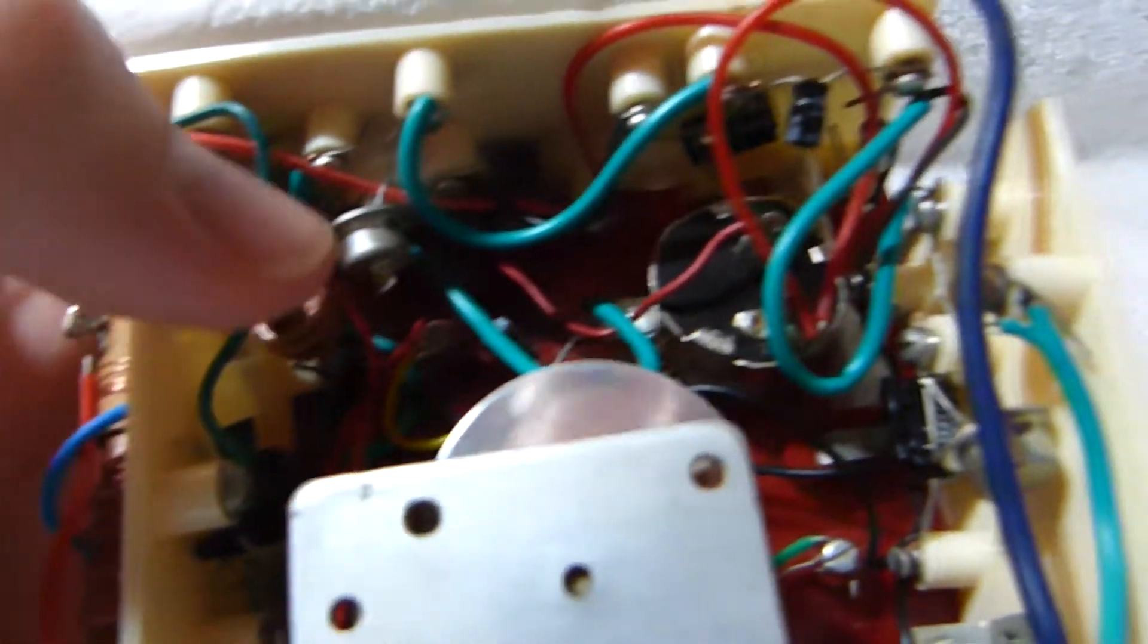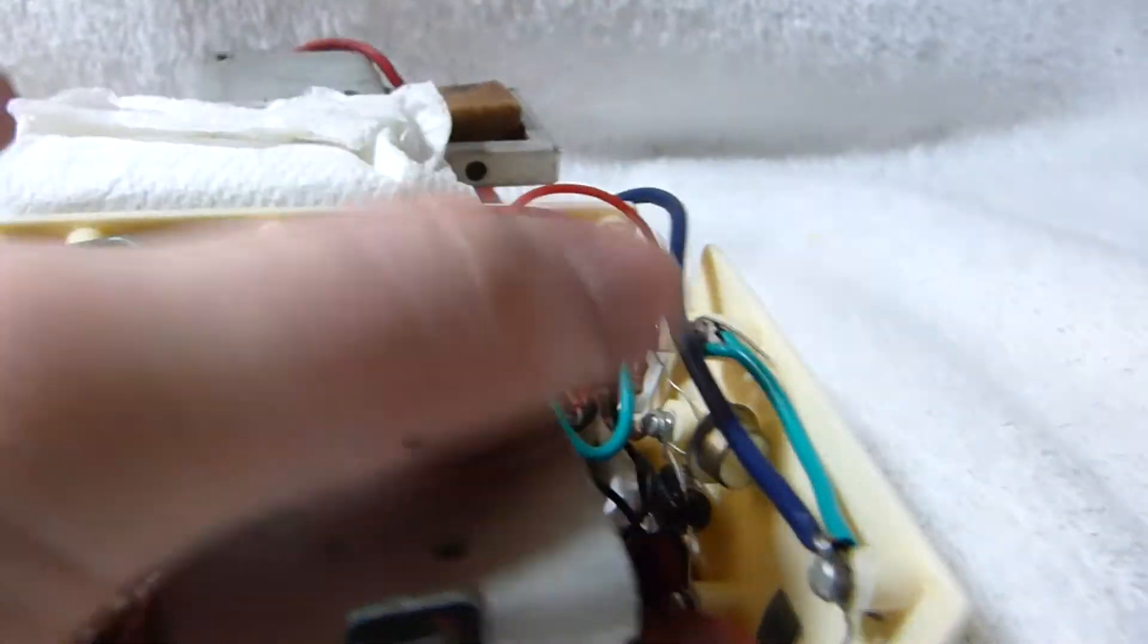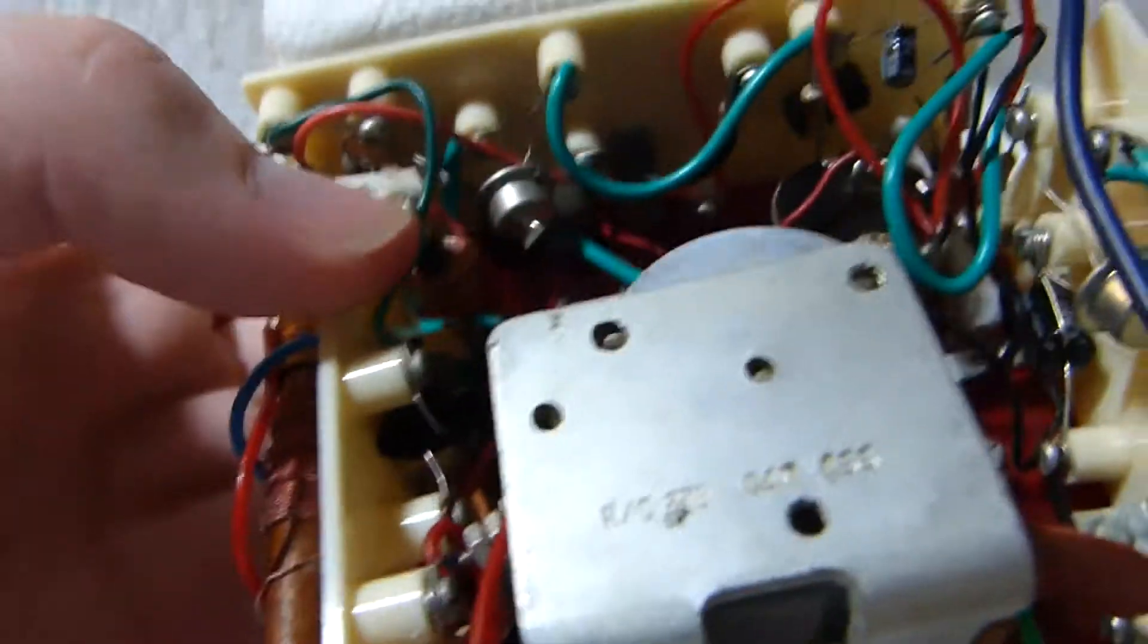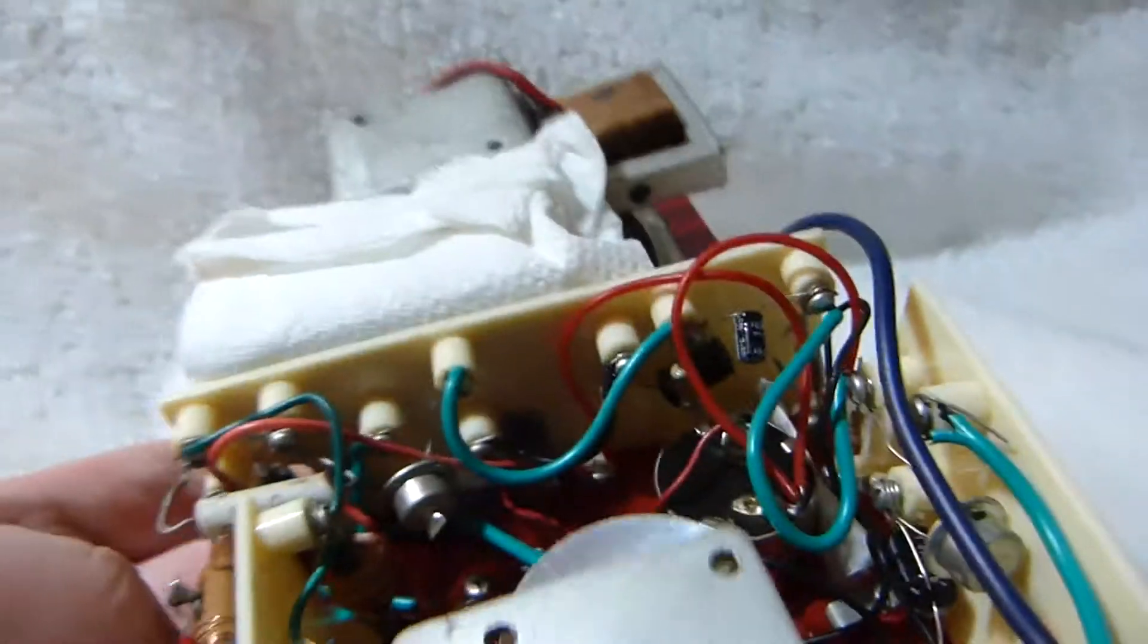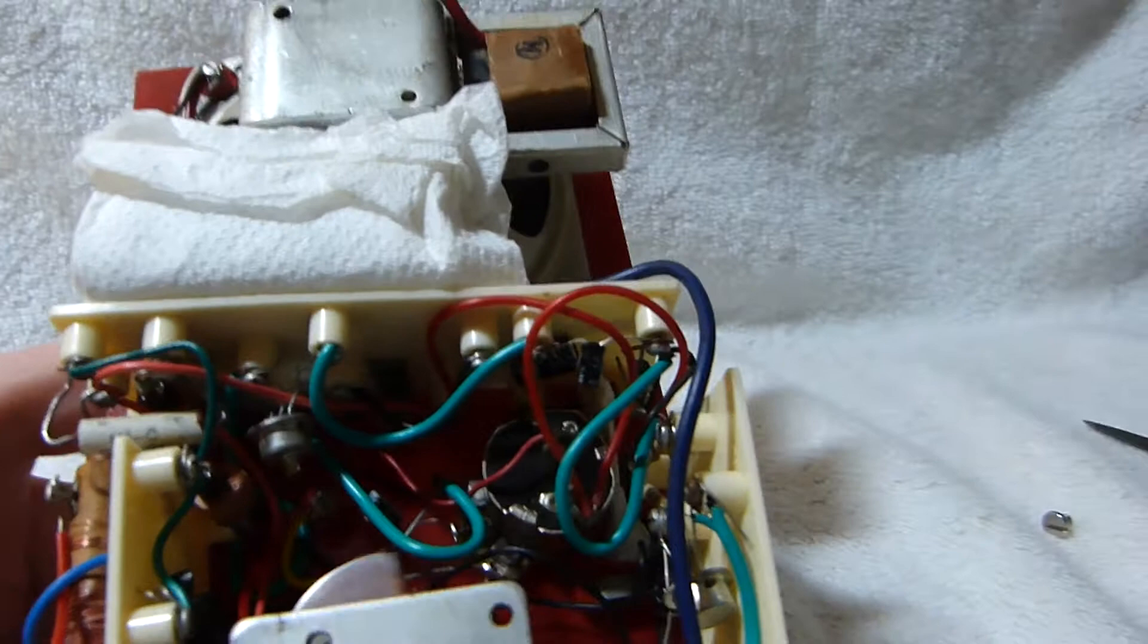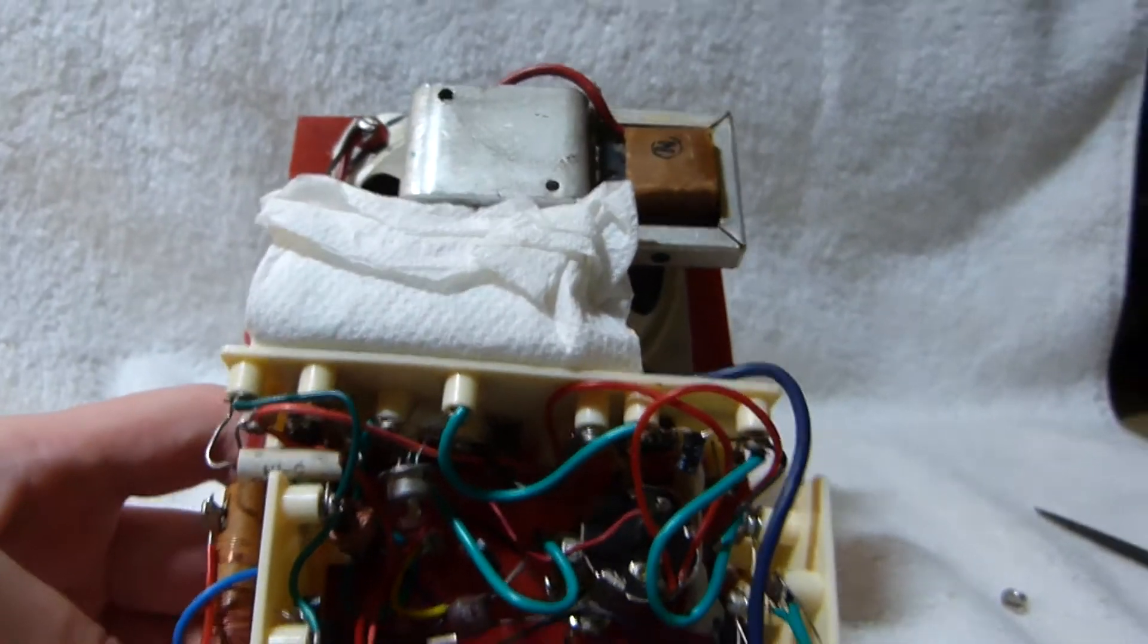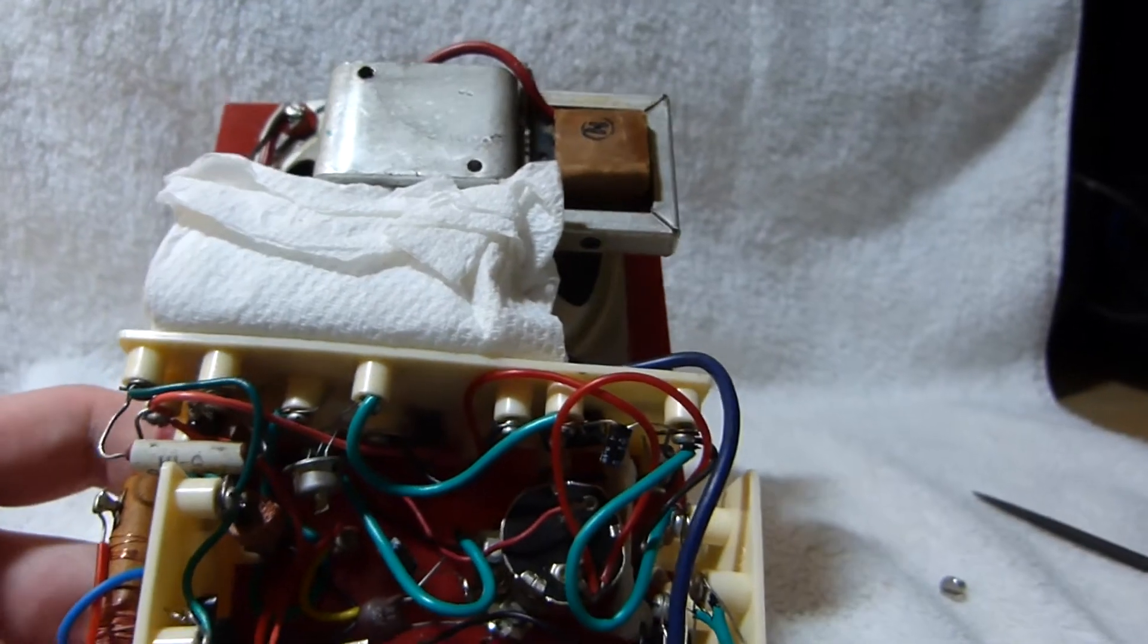So that's an NPN RF and PNP AF and another PNP AF. They're all rejects that are not marked from the factory, so they have high leakage and low gain. But it's enough to make this set work, and fairly well considering it's just a three reject transistor set.